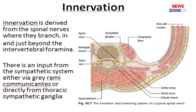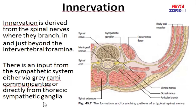Innervation of the vertebral column comes from the spinal nerve, with branches in and just beyond the intervertebral foramen, and also input from the sympathetic system — either via grey rami communicantes or directly from the thoracic sympathetic ganglia.